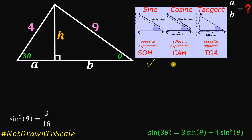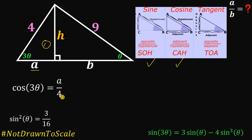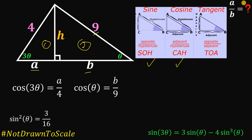Next, let's use the cosine function. From the first right triangle, cosine of 3 theta equals A over 4 — adjacent over hypotenuse. From the second right triangle, cosine theta equals B over 9. Since we want the ratio of A to B, let's take the ratio of these two equations.